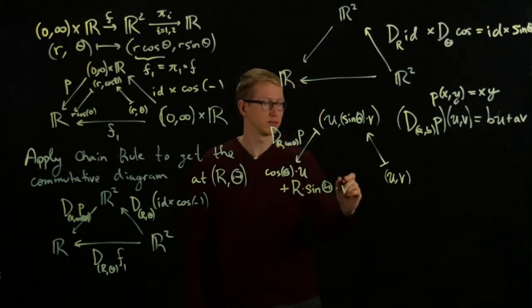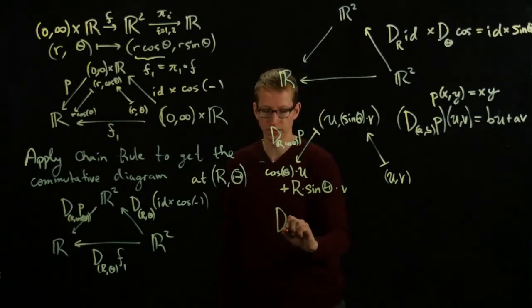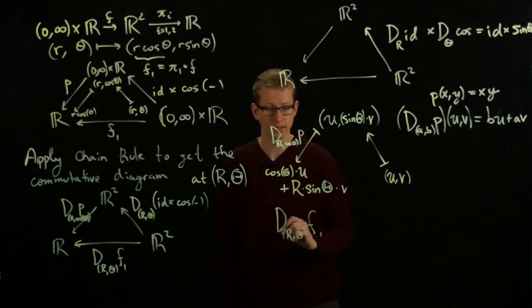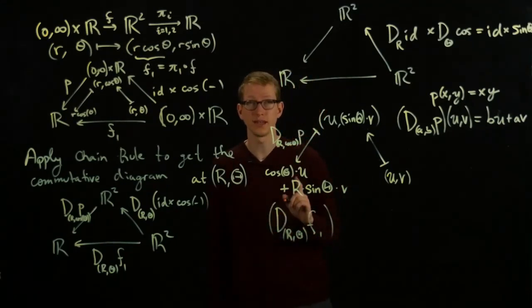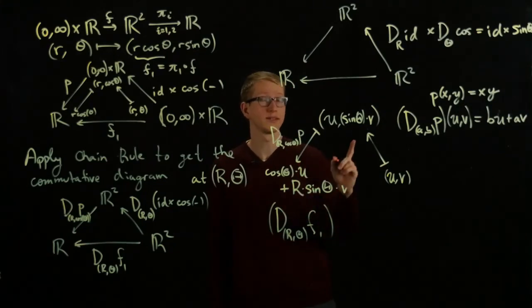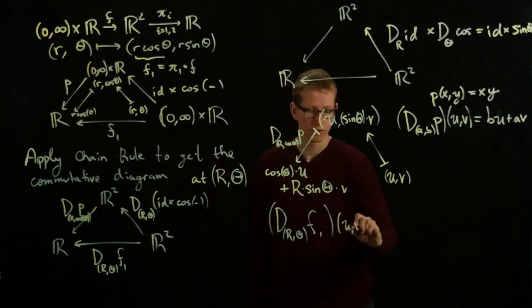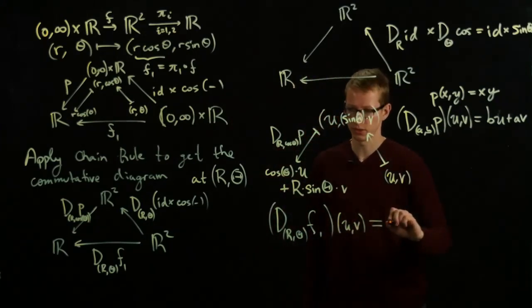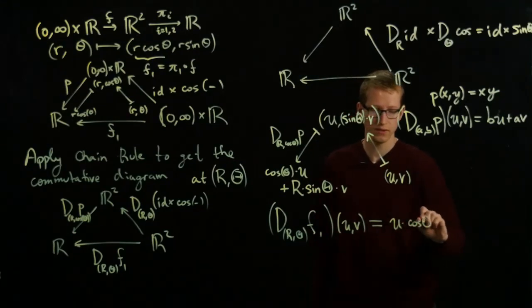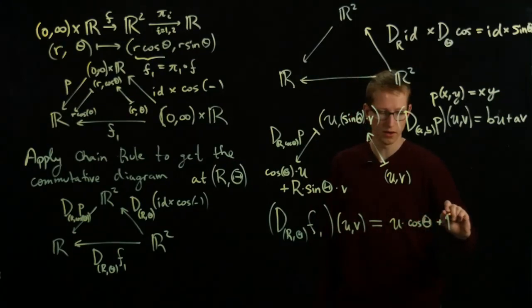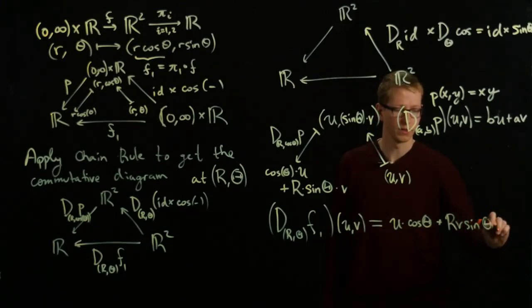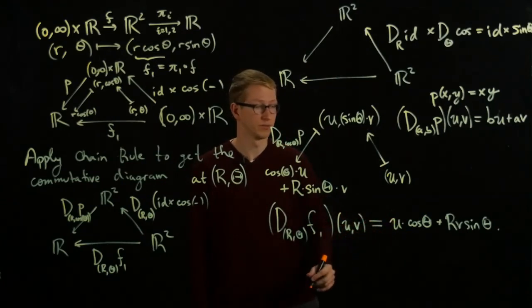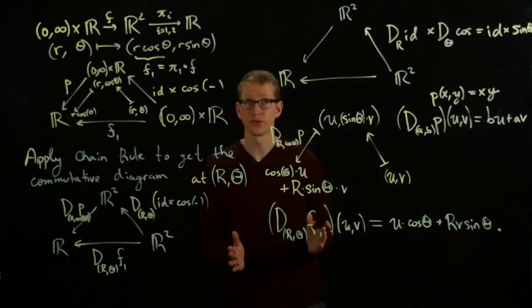So this is what the derivative does. In other words, the derivative at (R, θ) of F₁ is given by the linear transformation that takes the vector (U, V) to U cos θ + RV sin θ. You can indeed check that this is a linear transformation, and that this is, in fact, the derivative of the first component.